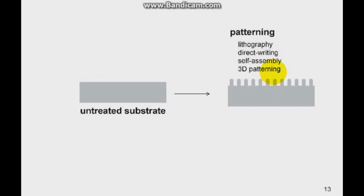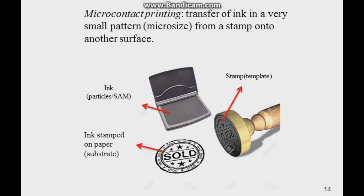For today's discussion, we'll just be focusing on the lithography method, specifically on microcontact printing. Let's define what microcontact printing is. Microcontact printing is basically the transfer of ink in a very small pattern, a microsize, from a stamp onto another surface.